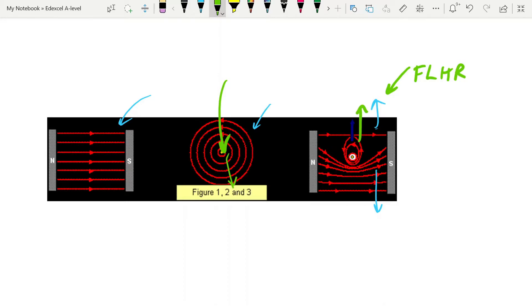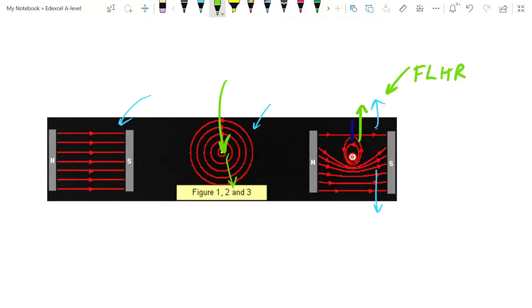So we use the right hand grip rule to determine the direction of the current and then Fleming's left hand rule to determine the force that's going to be exerted on the wire.